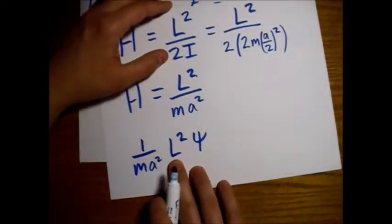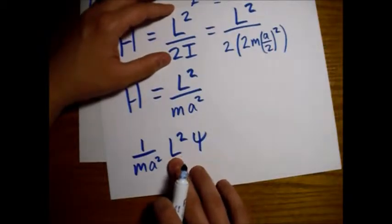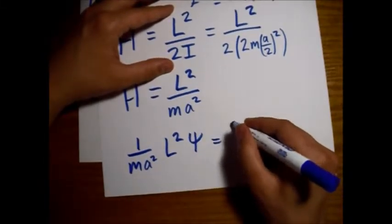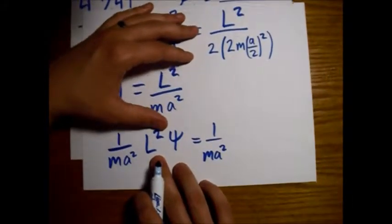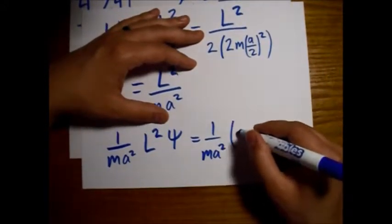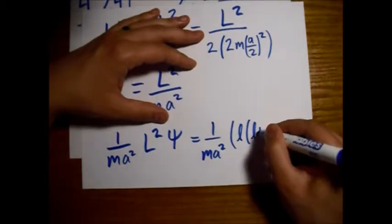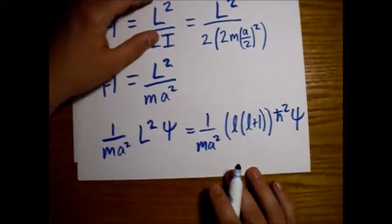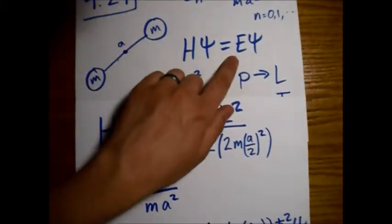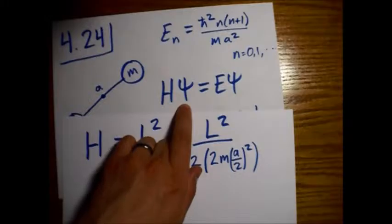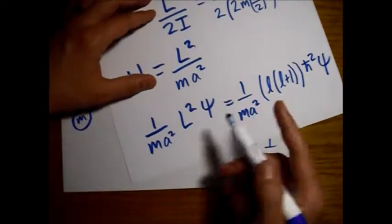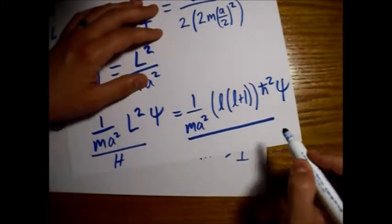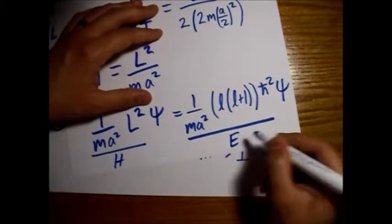And we know the eigenvalues of L squared. So we'll still get this term, 1 over mA squared, carry over. But now we know these eigenvalues. It's L times L plus 1, and h bar squared. So again, back in our Schrödinger equation, we have the Hamiltonian multiplied by the wave function equals the energy times wave function. So here's the Hamiltonian part, and here is the eigenvalue part.